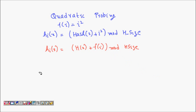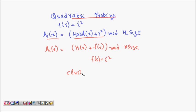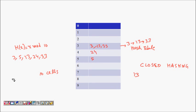For quadratic probing, we probe for the next empty cell using f(i) = i². So h_i(x) = hash(x) + i² mod table size. We use i² because linear probing had a clustering problem — elements clustered together. Quadratic probing spreads out the probes using 1², 2², 3², 4², and so on.